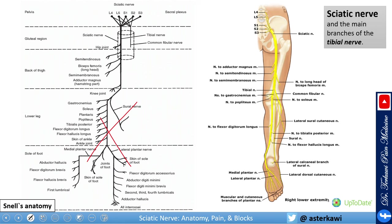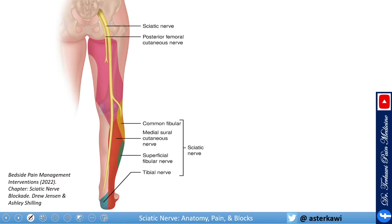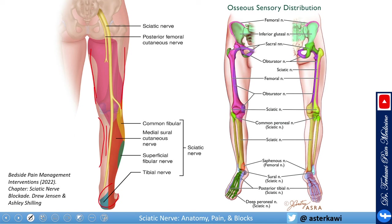In terms of sensory innervation, the sciatic nerve supplies most of the posterior thigh, most of the posterior leg except a small medial part from the saphenous nerve, and most of the foot through its branches. Looking at the osteotome, the fibula and tibia are mainly supplied by the sciatic nerve. At the ankle it is mainly from the sciatic nerve, except the medial epicondyle area from the saphenous nerve, and the foot is mainly from the sciatic nerve.